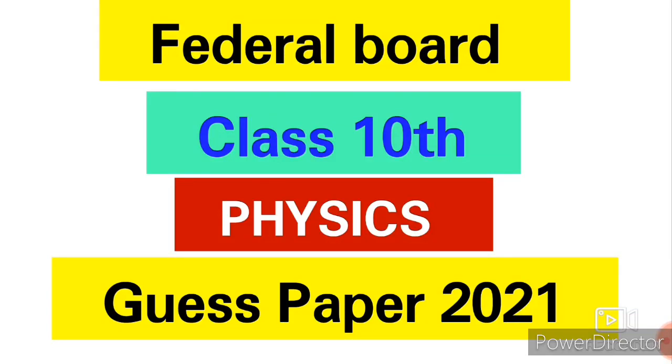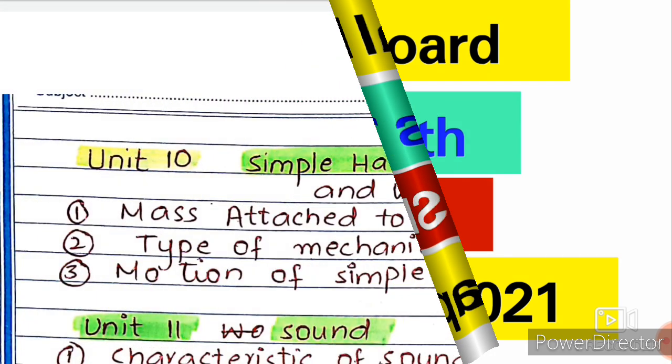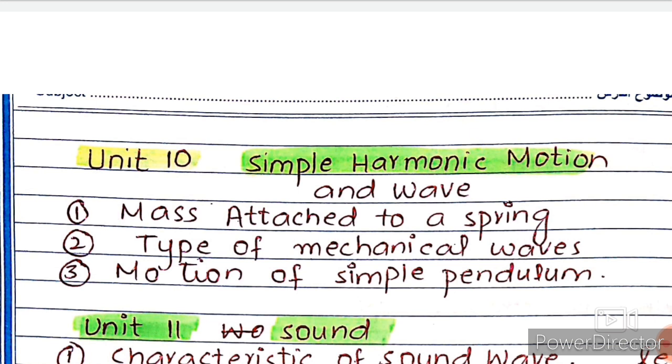Assalamu alaikum, welcome back to my channel. Today we will share Federal Board Class 10 Physics guess paper for examination of 2021. This is for Federal Board students, so let's start our video. First, Unit number 10 is simple harmonic motion. From this we have three important topics: mass attached to the spring, motion of simple pendulum, and types of mechanical waves.